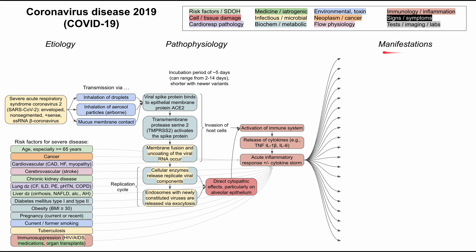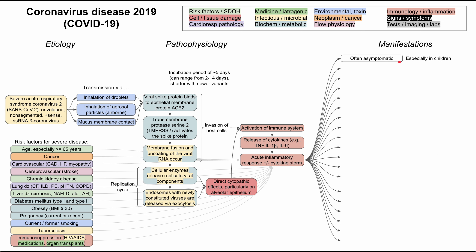COVID-19 can often be asymptomatic, and this is especially common in children or young people. Even those with asymptomatic infection can still be infectious and transmit the disease to other people.